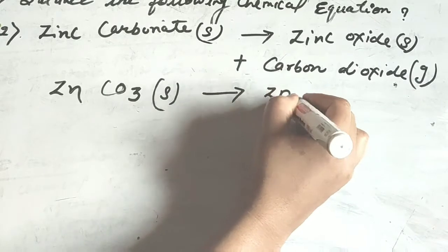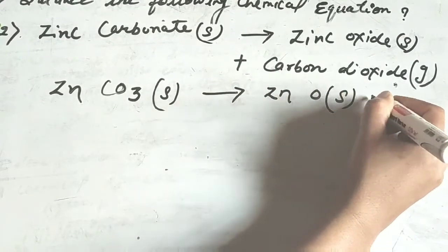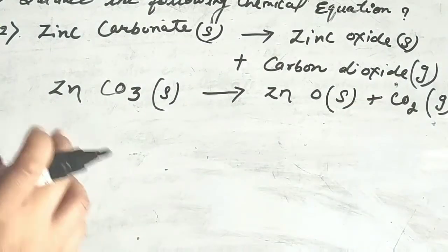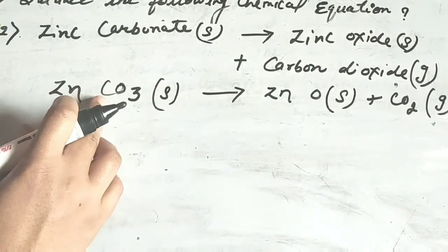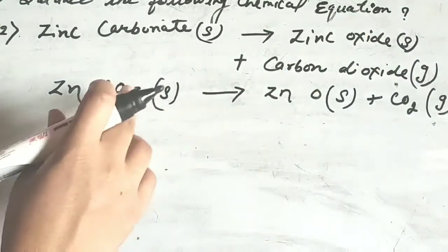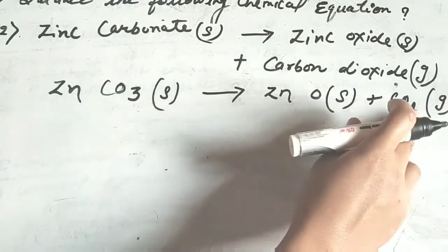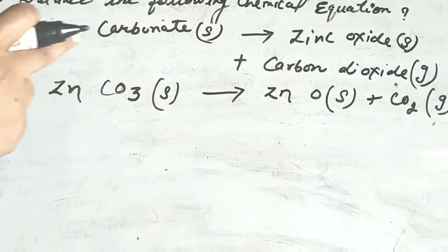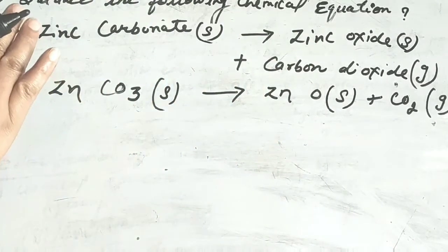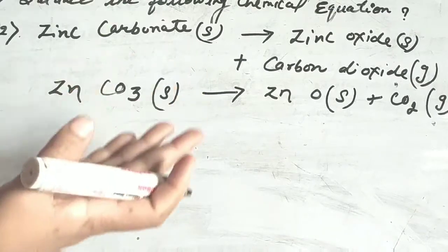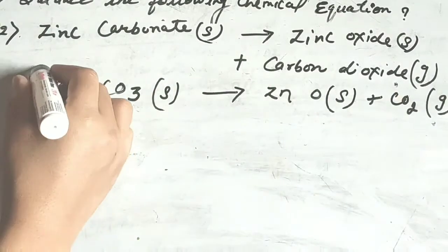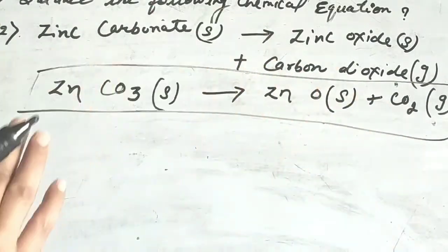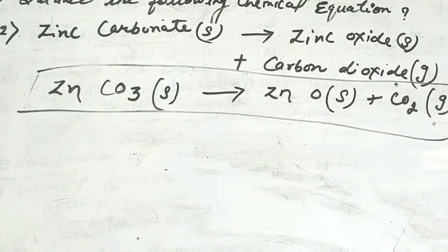Zinc oxide is ZnO in solid form, plus carbon dioxide CO₂ in gaseous form. Zinc: 1 molecule on each side — balanced. Carbon: 1 molecule on each side — balanced. Oxygen: 3 on left, 2 + 1 = 3 on right — balanced. This equation is already balanced.